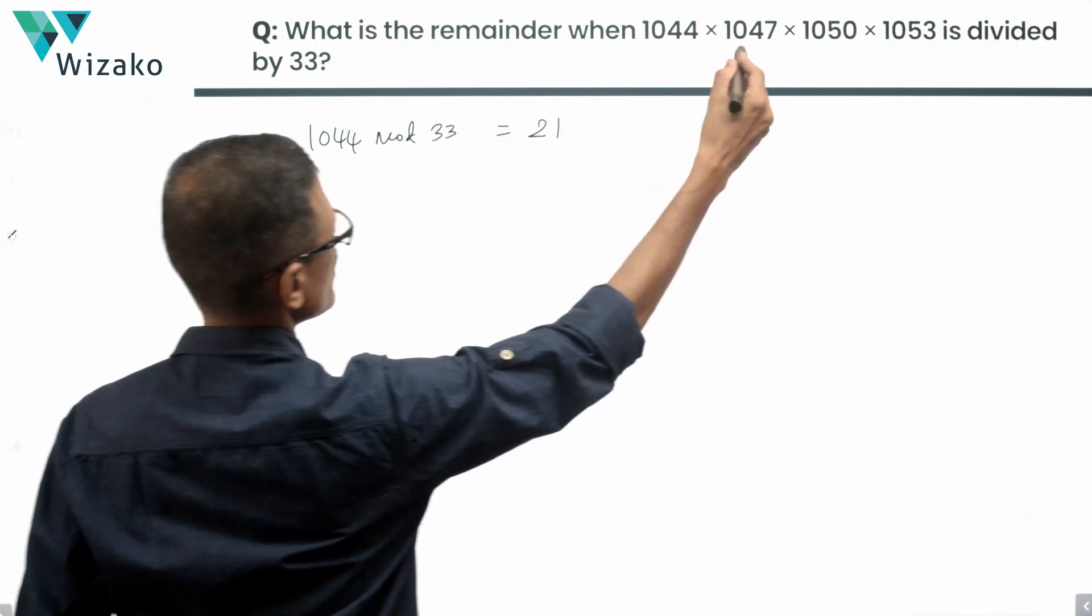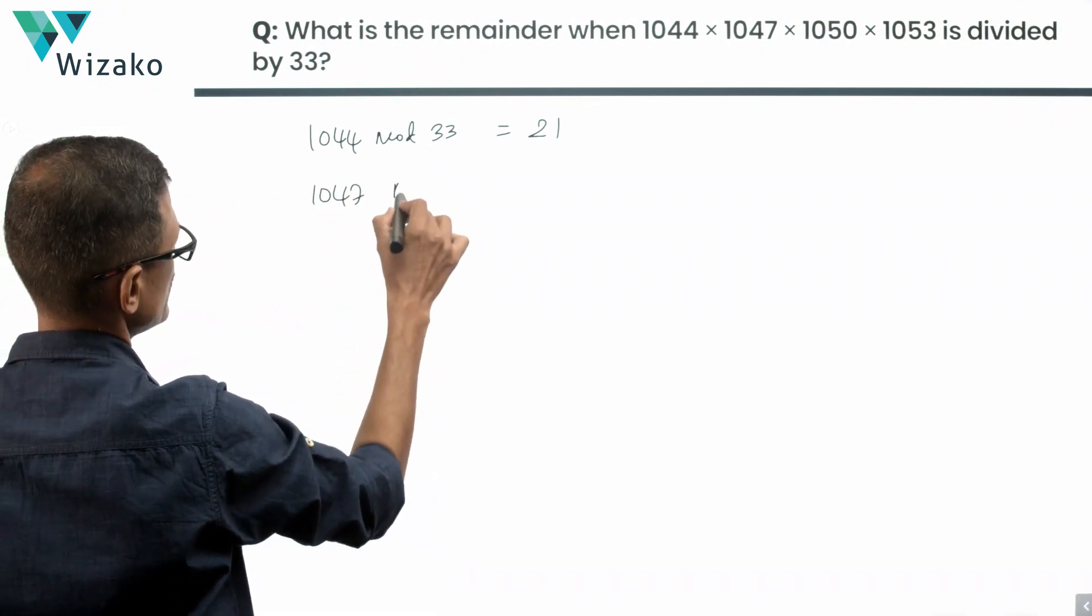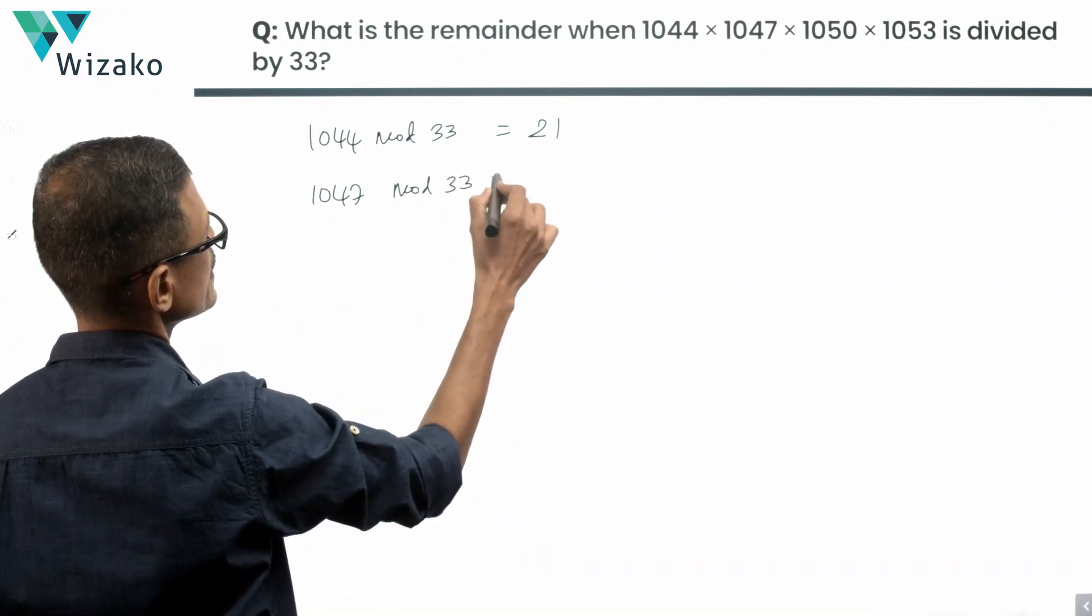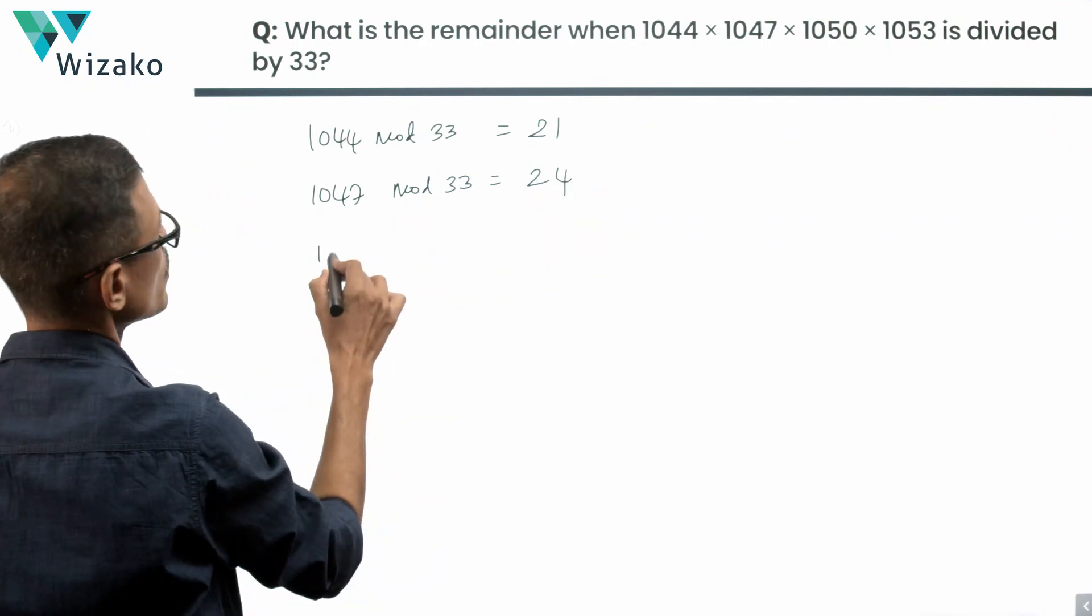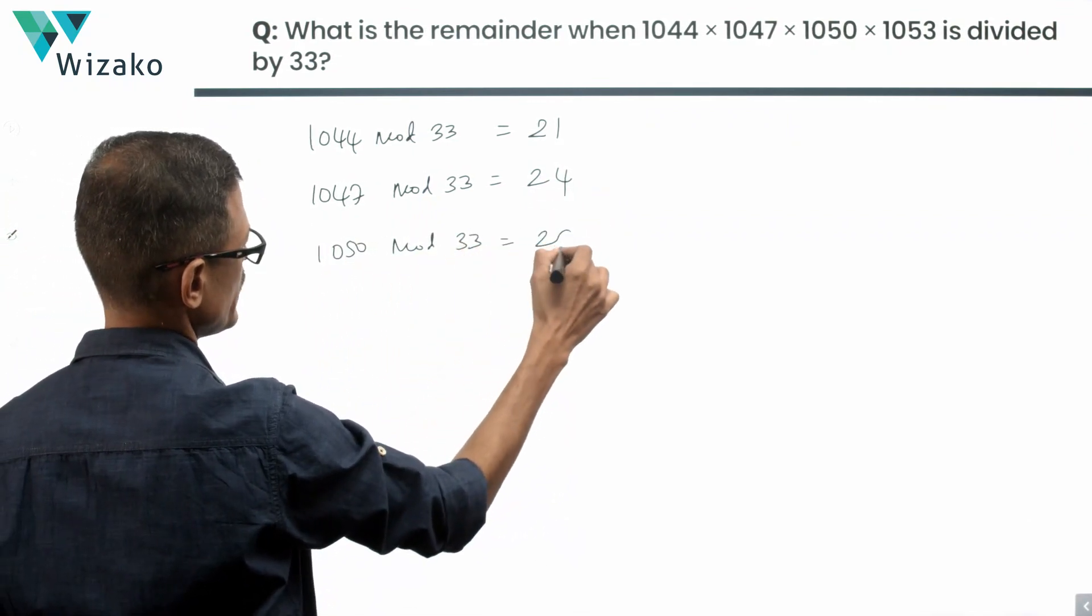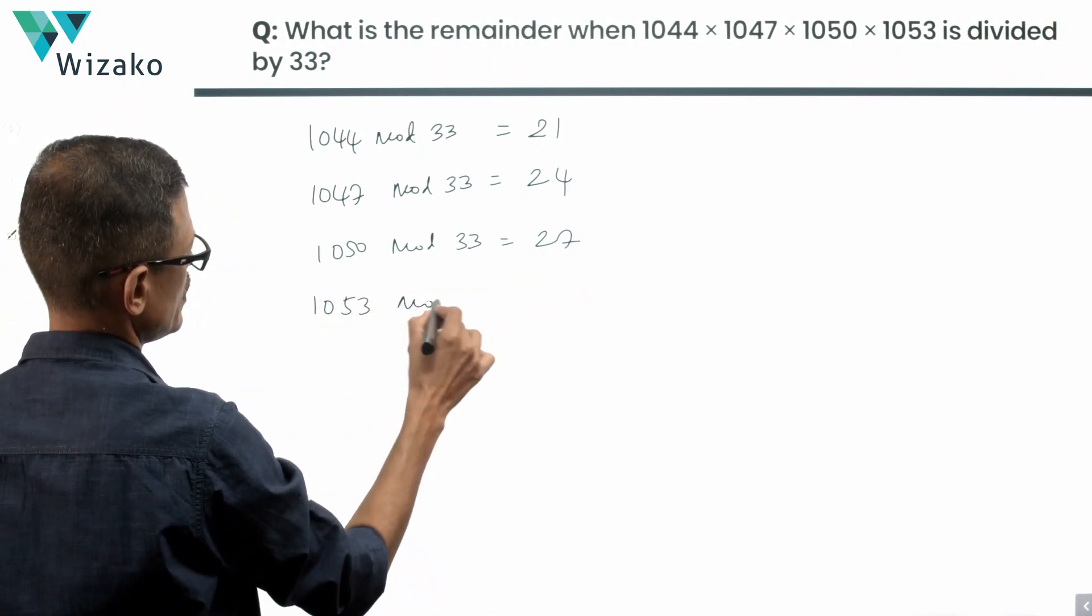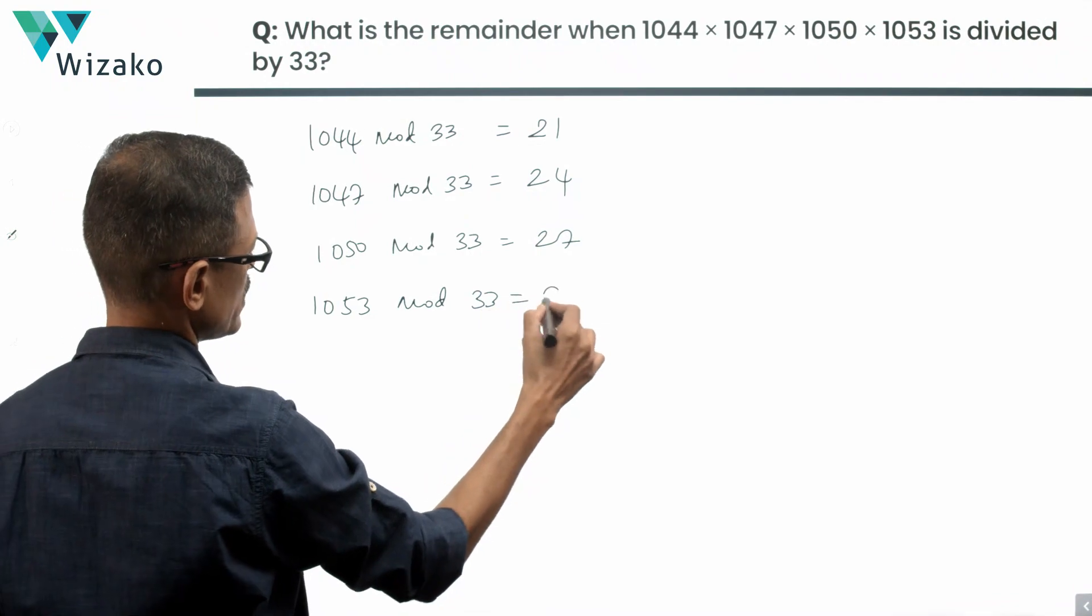Once I've got the remainder for this, the rest are all 3 more. So 1047 mod 33 equals 24, 1050 mod 33 equals 27, and 1053 mod 33 equals 30.